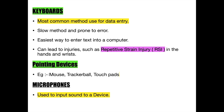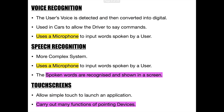The next input device is the microphone. The microphone is used to input sound to a device, and microphones are used in identification processes such as voice and speech recognition. In the voice recognition process, the user's voice is detected and then converted into a digital format. These voice recognition softwares are used in cars to allow the driver to say commands, and a microphone is used in these softwares to input words spoken by the user.